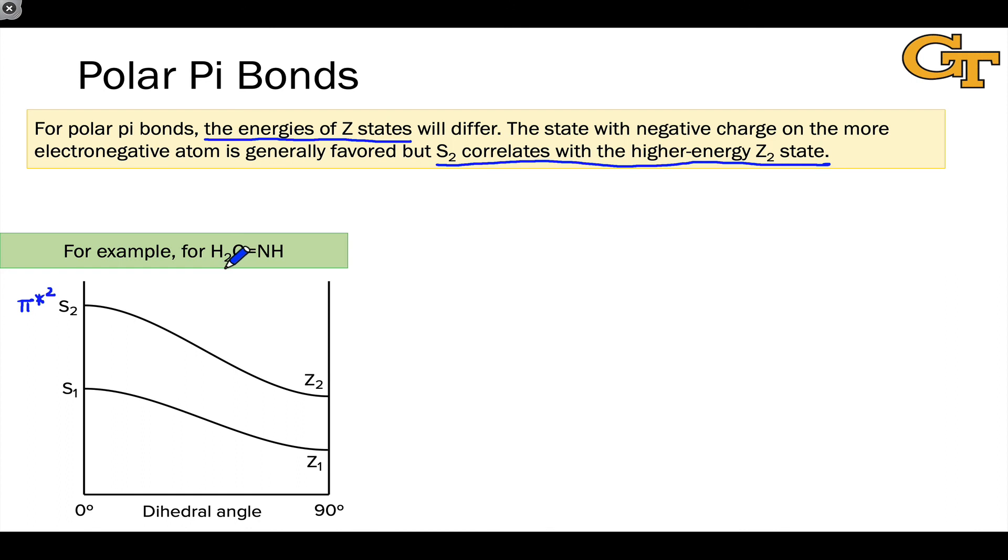S2 is the pi star 2 state. In a pi containing chromophore like an imine with a polarized pi bond, that pi star orbital is predominantly located or has the higher density or the larger lobes on the less electronegative atom, on the carbon atom. So in the pi star 2 state, we have most of the electron density on carbon. As this state evolves, that electron density will tend to remain on carbon until we get to the z2 state, which is well described by a situation where we have both electrons on carbon with negative charge and positive charge on the nitrogen atom.